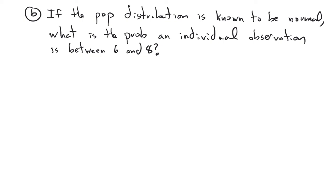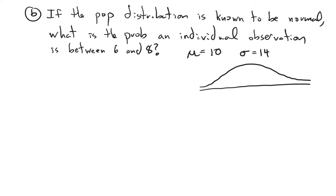Now let's do Part B. Let's pretend the population distribution was a normal distribution. Remember, in the last example we didn't know what it looked like, but now let's say we know it's normal. What's the probability that an individual observation is between 6 and 8? The mean of our population distribution is 10 and the standard deviation is 14.